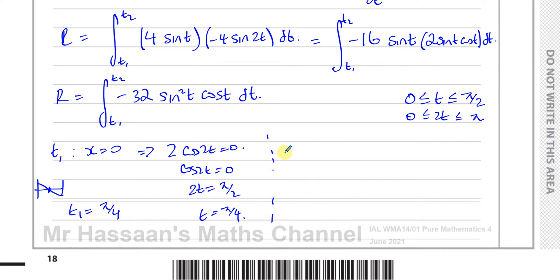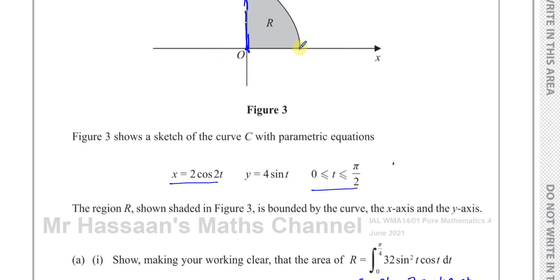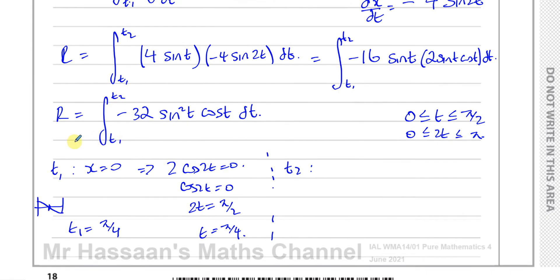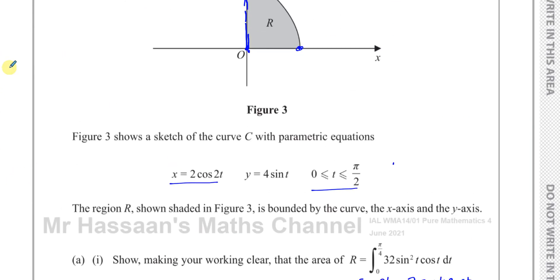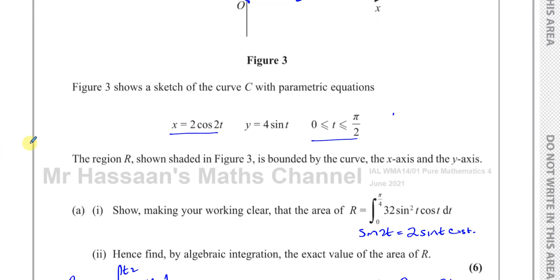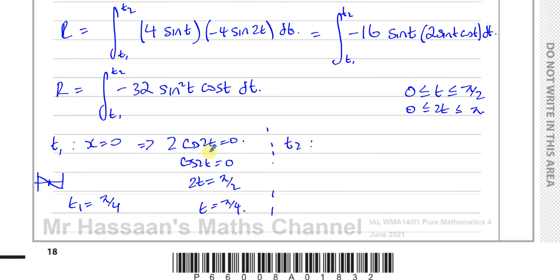For t2, this is where y equals 0. Setting 4 sine t equals 0 gives sine t equals 0, so t equals 0. Within the range 0 to pi over 2, that means t2 equals 0.